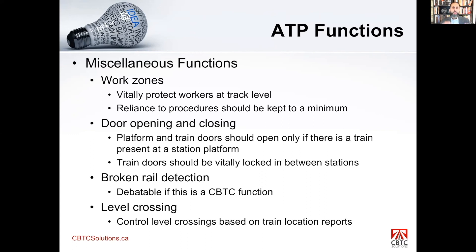Door control is a critically important feature as it is the main interface between the transit authority and the riding public. Broken rail detection is a debatable function — in my opinion it is not a CBTC function, since CBTC by definition determines train location without track circuits. Broken rail detection should be a secondary auxiliary feature, not part of the CBTC itself. A proper track maintenance program on a CBTC system renders broken rail detection a non-issue.